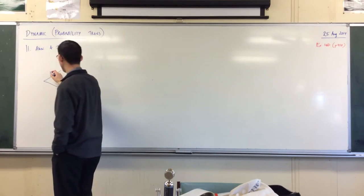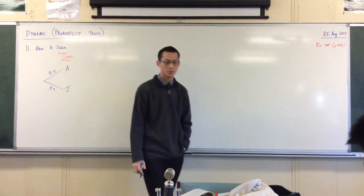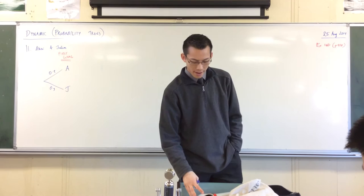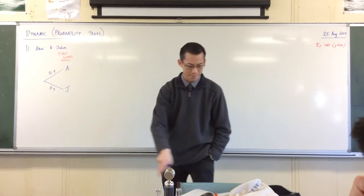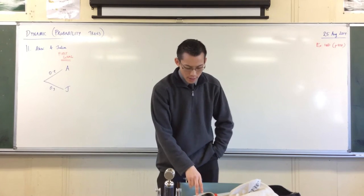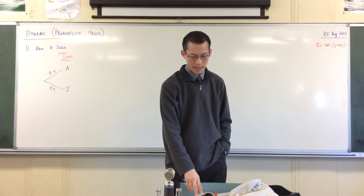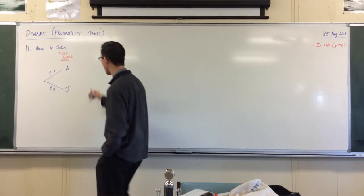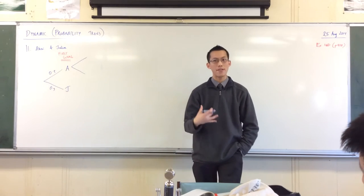So if Alex wins the first game, his confidence increases and his probability of winning the second game is increased to 0.55. So here we are up the top. We're considering if Alex has won. Still there are two alternatives, Alex or Julia, but now the odds are in his favour.